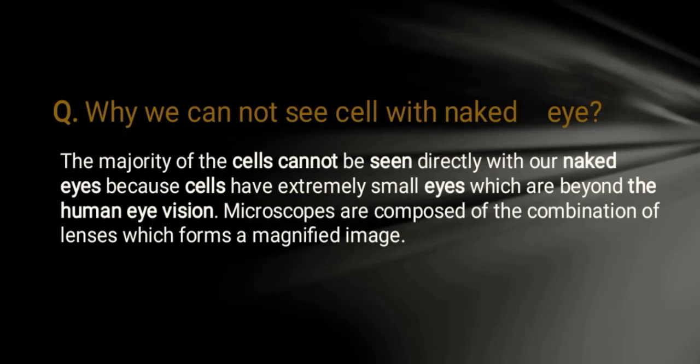Cells cannot be seen directly with our naked eye because cells have extremely small size which is beyond the human eye's vision. Microscopes are composed of a combination of lenses which form a magnified image.